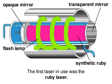At the core of the Ruby laser is a bar of synthetic ruby. At each end of the bar is a mirror, one of which is transparent enough to allow light to pass.